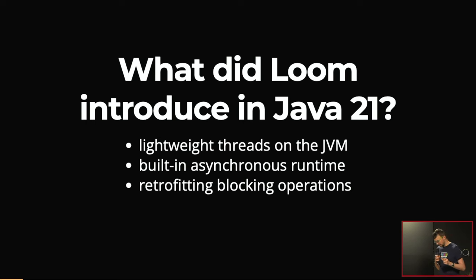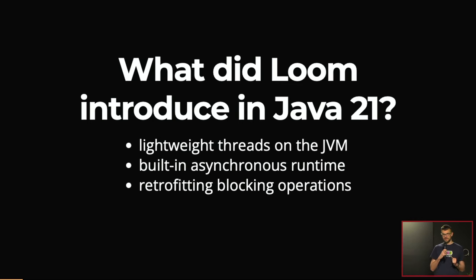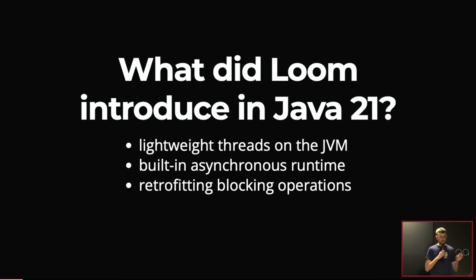The third thing Java 21 introduced is retrofitting all the blocking operations so that they are virtual-thread-aware. Before, it was kind of forbidden to call Thread.sleep, for example. Now it's completely fine, as it will only block the virtual thread, as long as we are running on a virtual thread. So all blocking operations, all IO blocking operations, semaphores, blocking queues — they can all be safely used again without compromising performance.